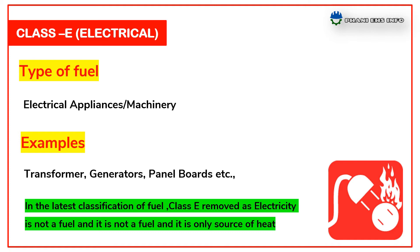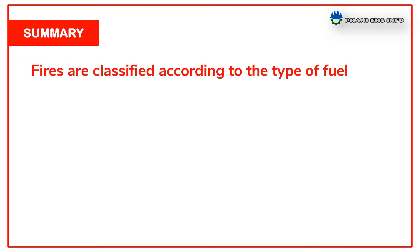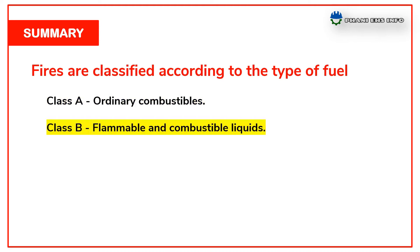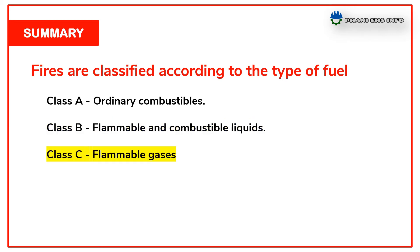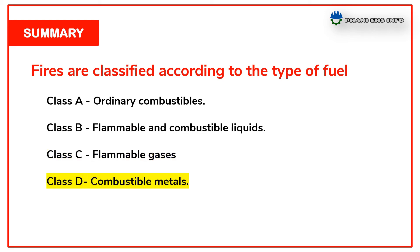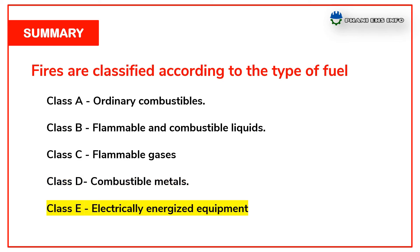Let me summarize this classification of fires. Fires are classified according to the type of fuel: Class A — ordinary combustibles; Class B — flammable and combustible liquids; Class C — flammable gases; Class D — combustible metals; Class E — electrically energized equipment.